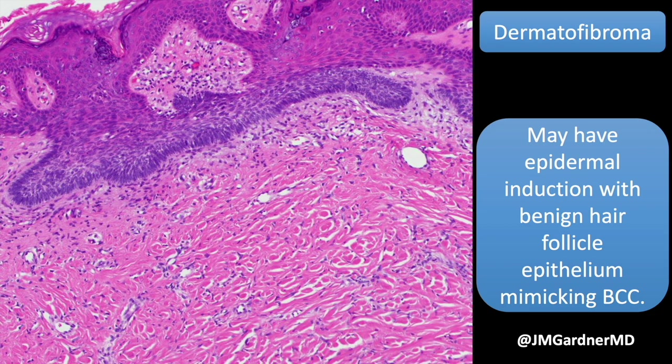One of the most common epidermal changes is induction of benign hair follicle epithelium, which can mimic basal cell carcinoma. For test purposes: if you see a dermatofibroma that looks like it has a basal cell carcinoma over top, the answer is epidermal induction. In real life, I have seen bona fide basal cell carcinomas growing over a DF, sometimes next to induction, raising questions about the relationship.